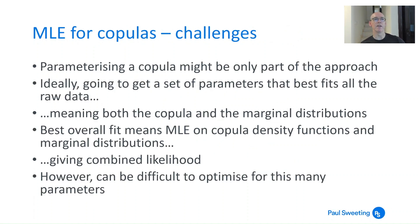For MLE on copulas, there are a few challenges. You're parameterizing a copula which might only be part of what you're trying to deal with. Ideally, you don't want to just find the parameters for the copula; you want to find the parameters that fit all of the raw data, meaning both the copula and the marginal distributions. Really you should be doing your maximum likelihood estimation on the whole lot, giving a combined likelihood. But that probably involves an awful lot of parameters, so it can be a little complex.